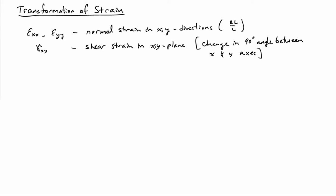I'd like to now talk about the transformation relationships for strains. We've been talking about how you transform stresses from one coordinate frame to another. The same question can be asked about the strains themselves. Suppose I have epsilon_xx and epsilon_yy — those are the normal strains in the x and y directions, so delta-l over l in the x and y directions — and the shear strain gamma_xy in the xy plane, which is the change of angle between the x and y axes.